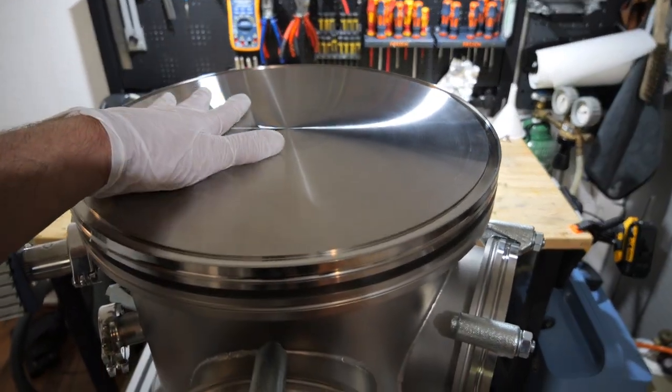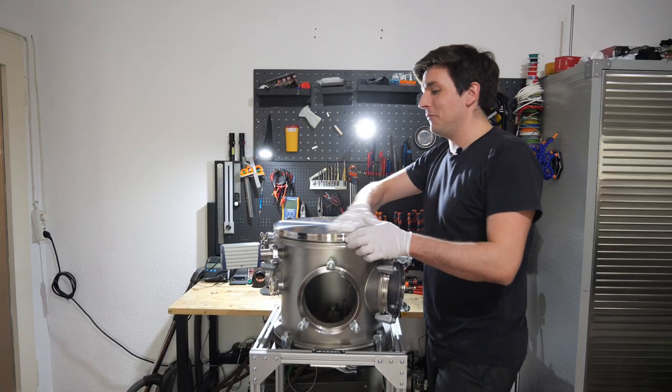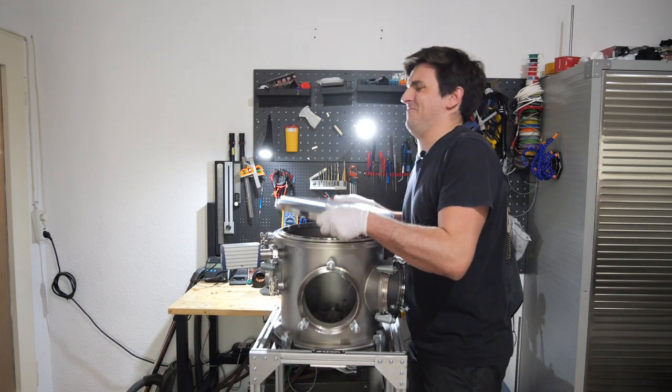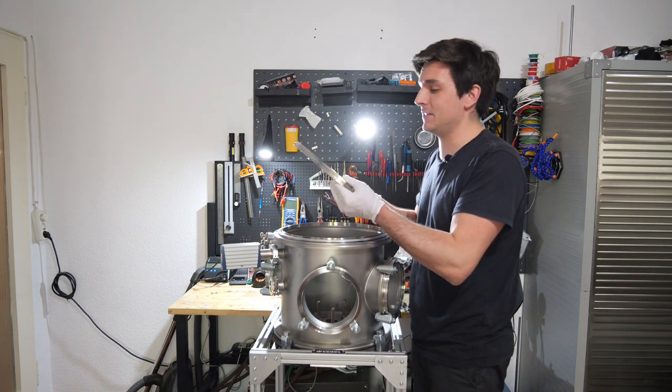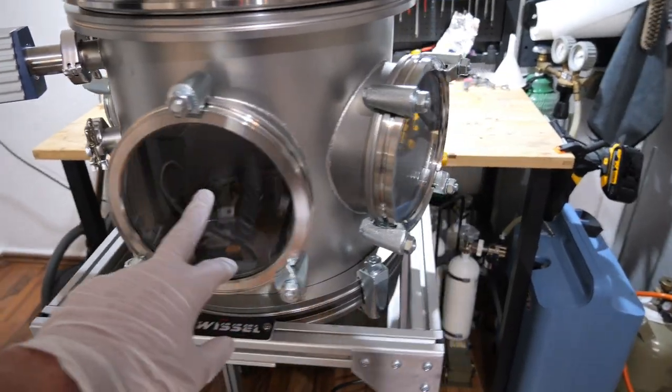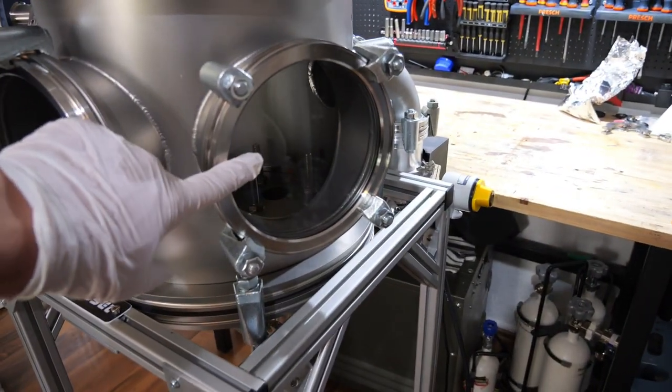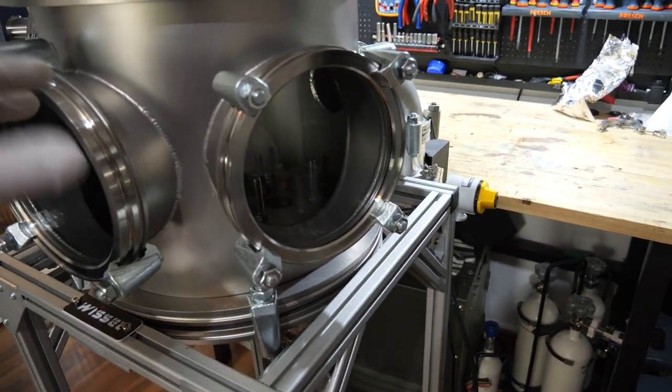The chamber itself is made out of ISO-K 320 flanges. The top flange here alone weighs over 14 kilograms. It is two centimeters of solid stainless steel and it's just gorgeous. I have these two ISO-K 160 viewports here and they are massive. They are basically bigger than the windows in my apartment.